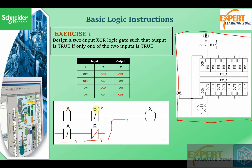For the third case, A is now on. When A is on, B is off, so A will allow the flow of logic and B will also allow the flow of logic. We have a logic signal at our output and X becomes on.